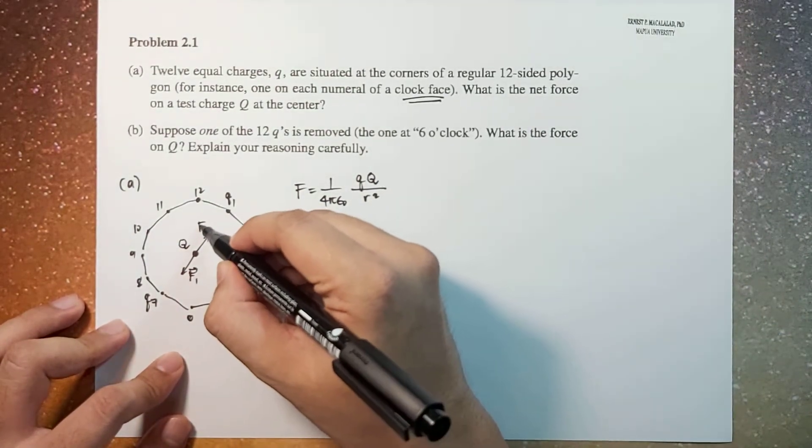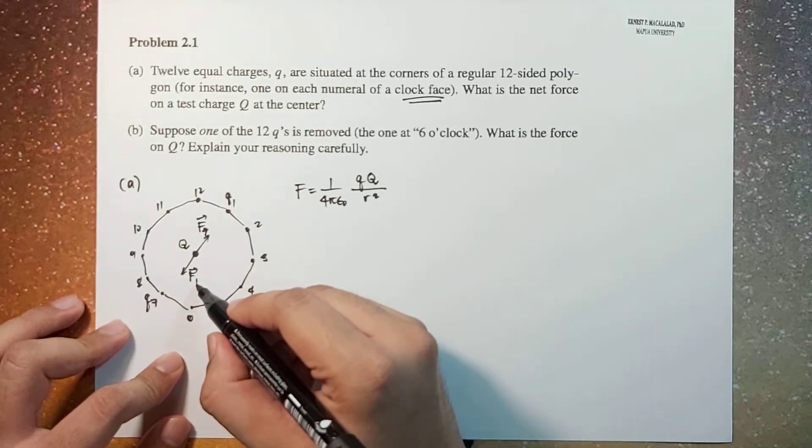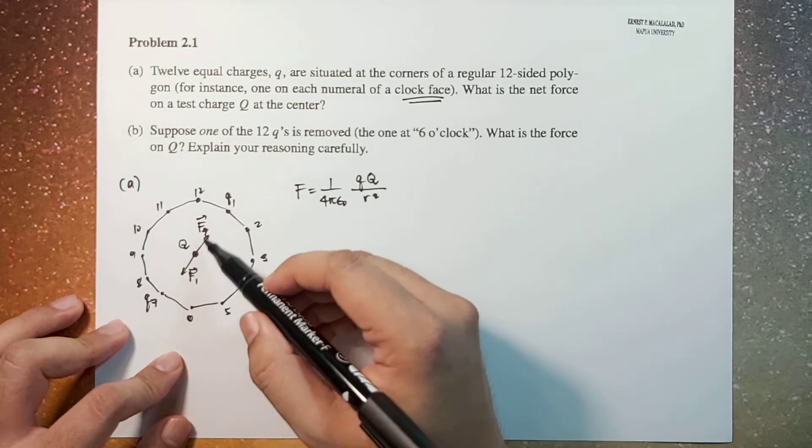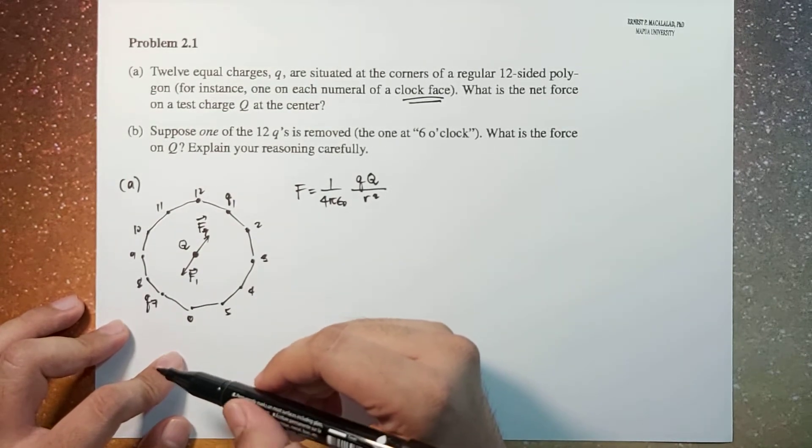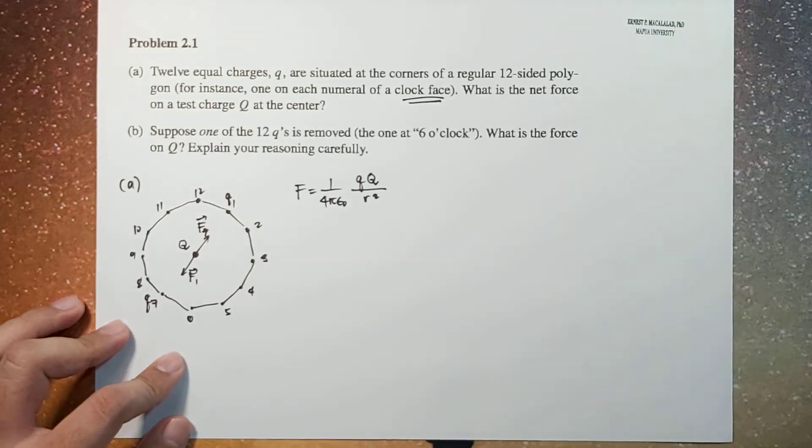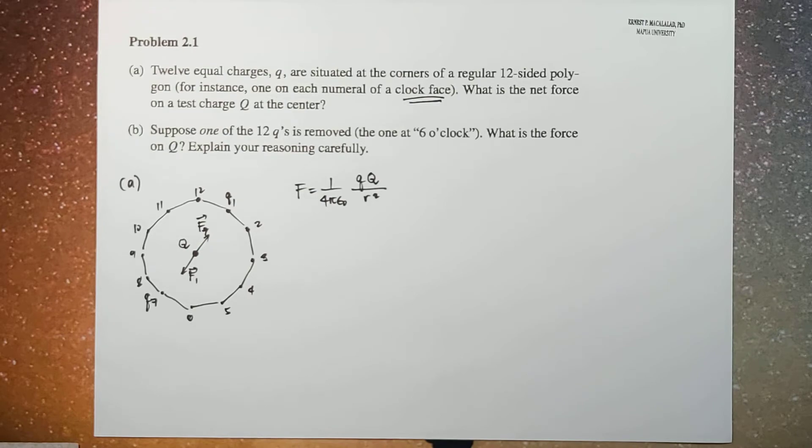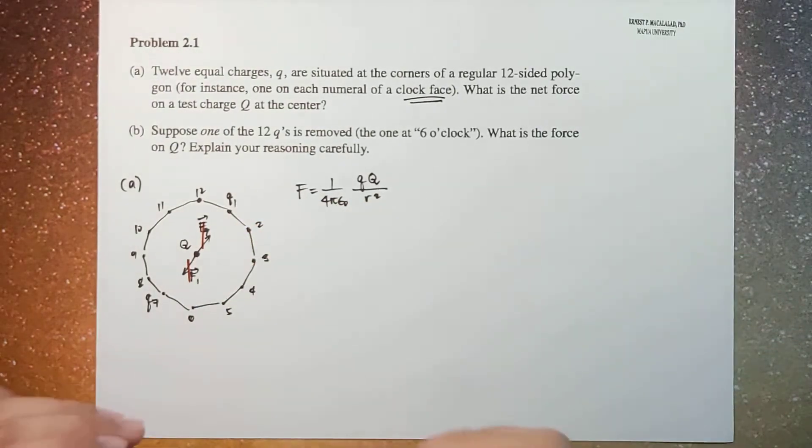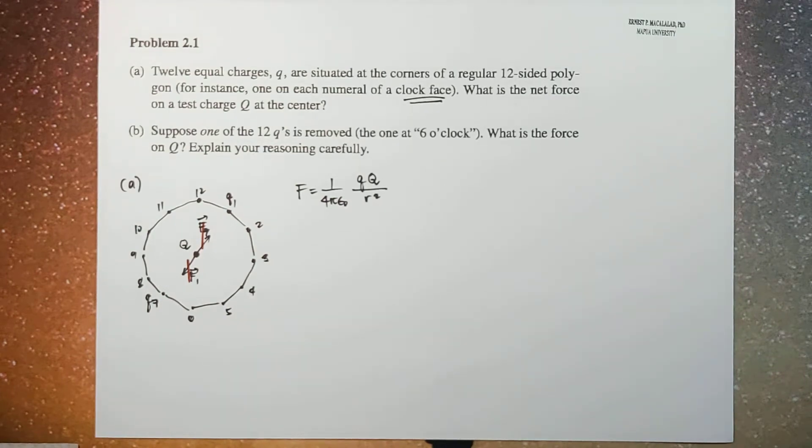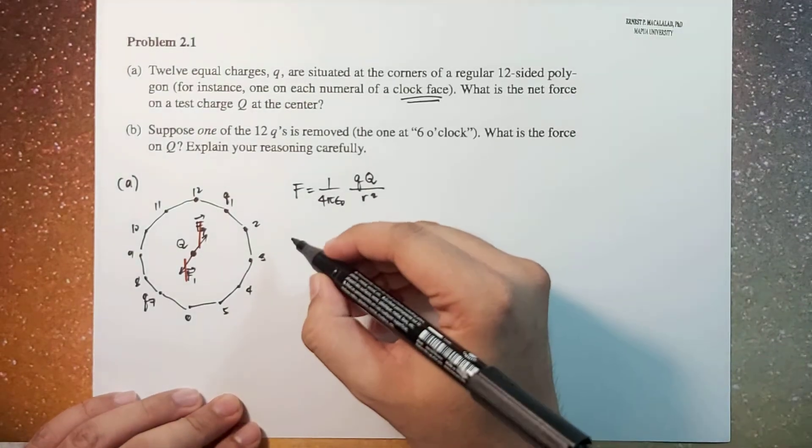Okay, so if this is the force exerted by seven and this is the force exerted by one, the magnitudes of the two forces are the same, but they are pointed in opposite directions. So in other words, the forces exerted by q1 and q7 will just cancel each other. The same goes for the rest of the charges. So in short, the net force on Q in this configuration is zero.